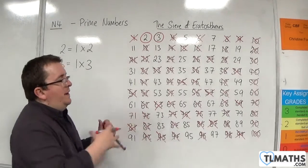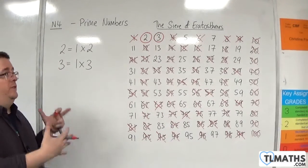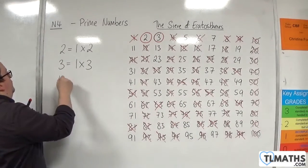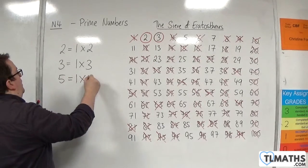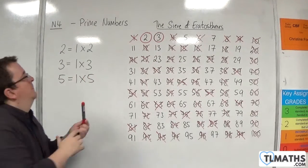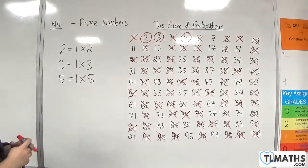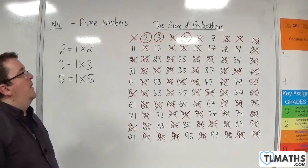Now, so the next number in the list that I haven't crossed off is five which must be prime. Five is just one times five. So then all of the multiples of five cannot be prime.